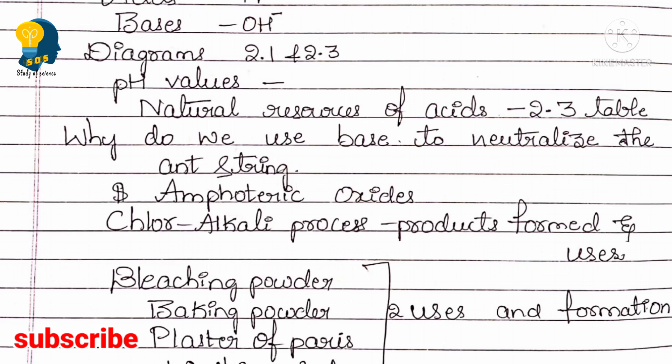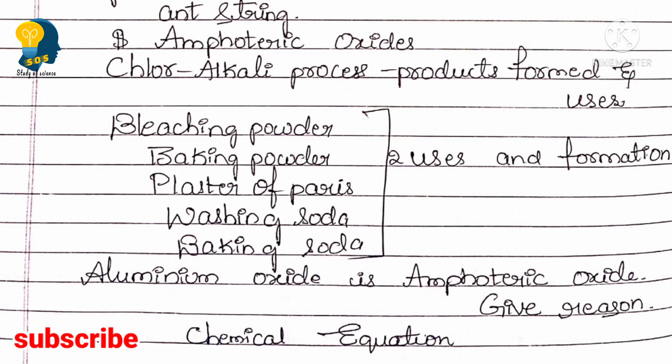Next, learn the chloralkali process — specifically the products released and their uses. The chloralkali process diagram (page 30) will not be asked, but the products — chlorine and hydrogen — and their uses will be asked. You should also know which gas is released at the anode and which at the cathode. These are the important points about the chloralkali process.